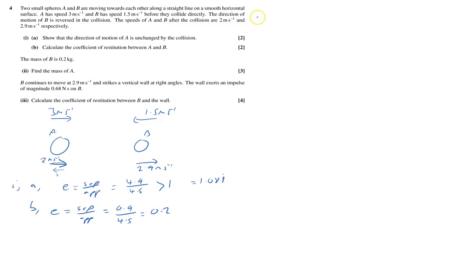And for part 2, mass of B is 0.2 kilograms, so that's 0.2 kilograms, and we've got to find the mass of A.